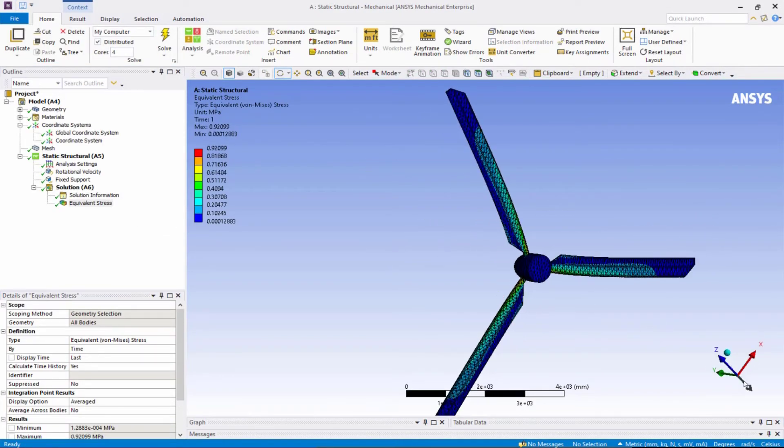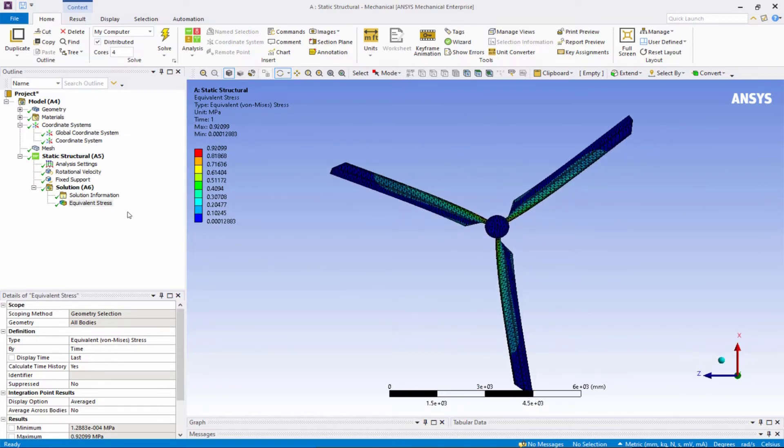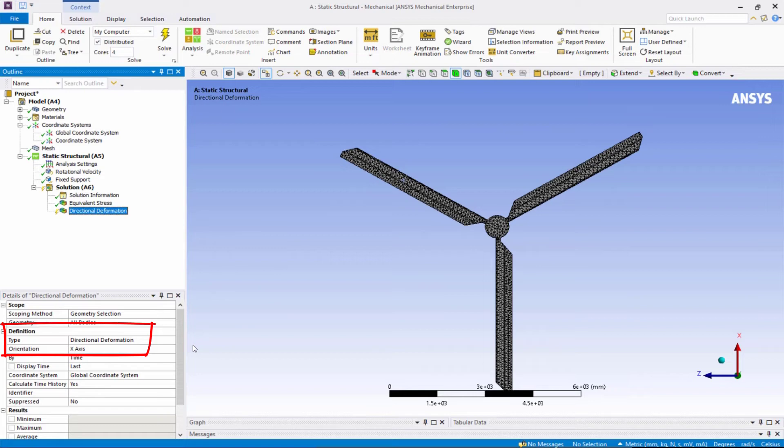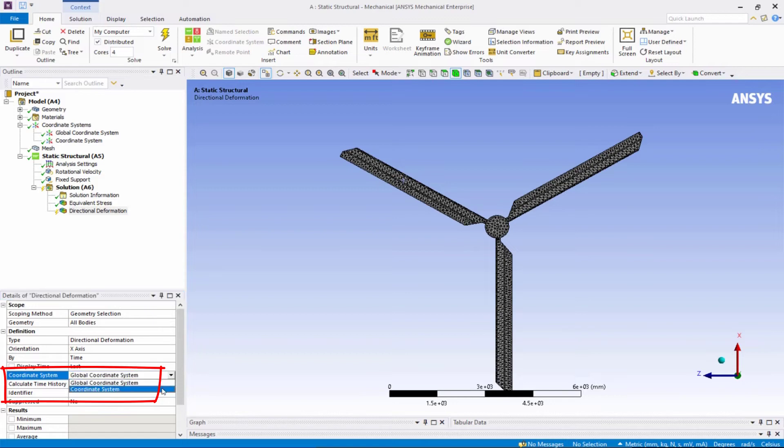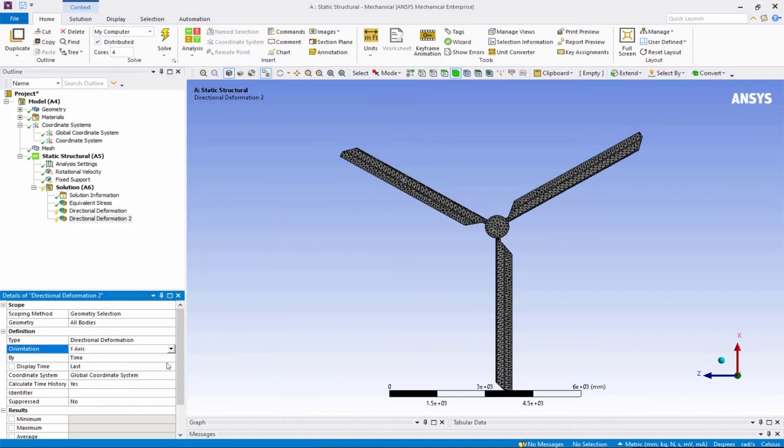Now let's check the displacement. For that, right-click on Solution. Insert directional deformation. Choose x-axis. Here, for the coordinate system, choose the cylindrical coordinate system that was created earlier. This will give us radial displacement. Repeat this for Y and Z direction to get circumferential and axial displacement respectively.